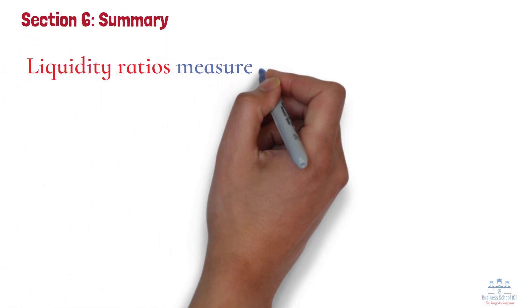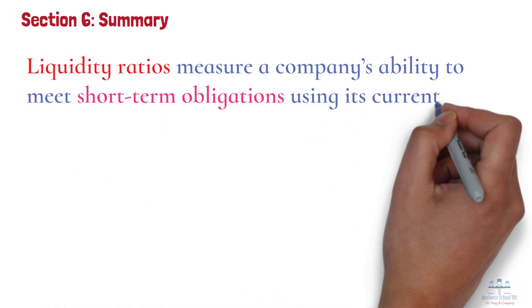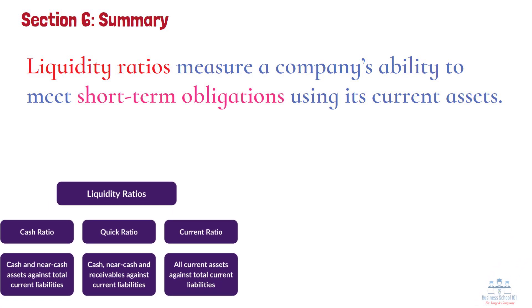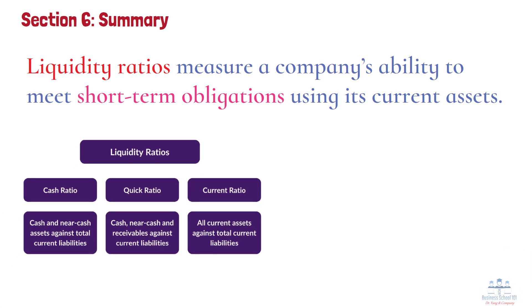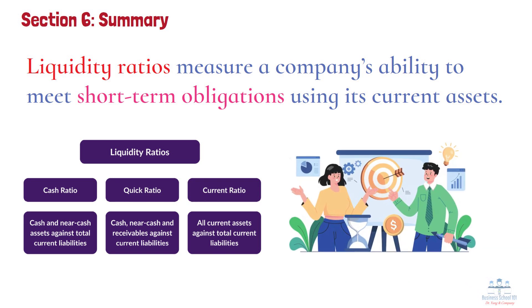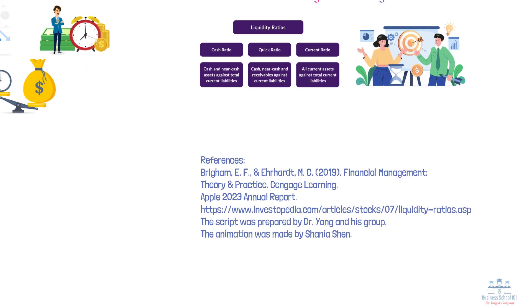In conclusion, liquidity ratios measure a company's ability to meet short-term obligations using its current assets. The current ratio gives a broad view of liquidity, the quick ratio offers a stricter assessment by excluding inventory, and the cash ratio focuses on pure liquid assets like cash. These ratios are crucial for investors, creditors, and managers to evaluate a company's immediate financial stability. That's all for today's topic. I hope you found this video helpful. Don't forget to give it a thumbs up and subscribe to my channel for more insights on accounting and financial analysis. Thanks for watching, and I'll see you next time.